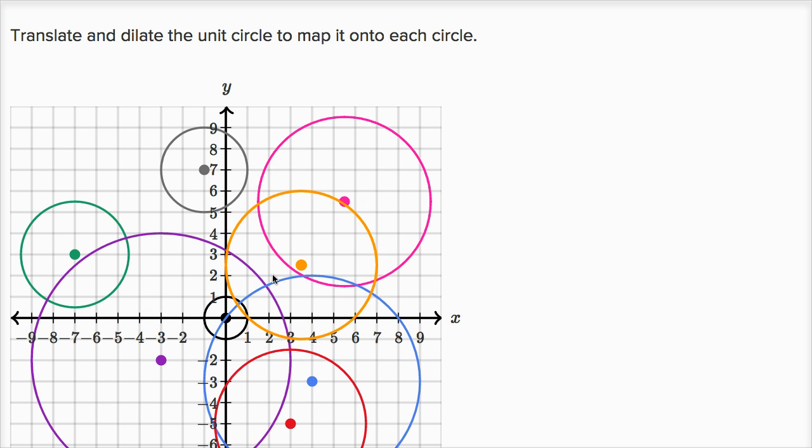So we're gonna translate and dilate this unit circle to map it onto each circle. So, for example, I can translate it so that the center is translated to the center of that magenta circle. And then I can dilate it so that it has been mapped onto that larger magenta circle.